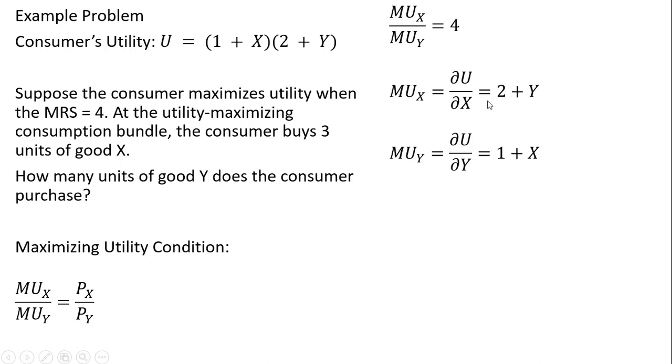So now plugging these results into our marginal rate of substitution formula, we get the following. And we know that at the utility maximizing consumption bundle, X equals 3. So X I said equal to 3. And now we're just going to solve this for Y.